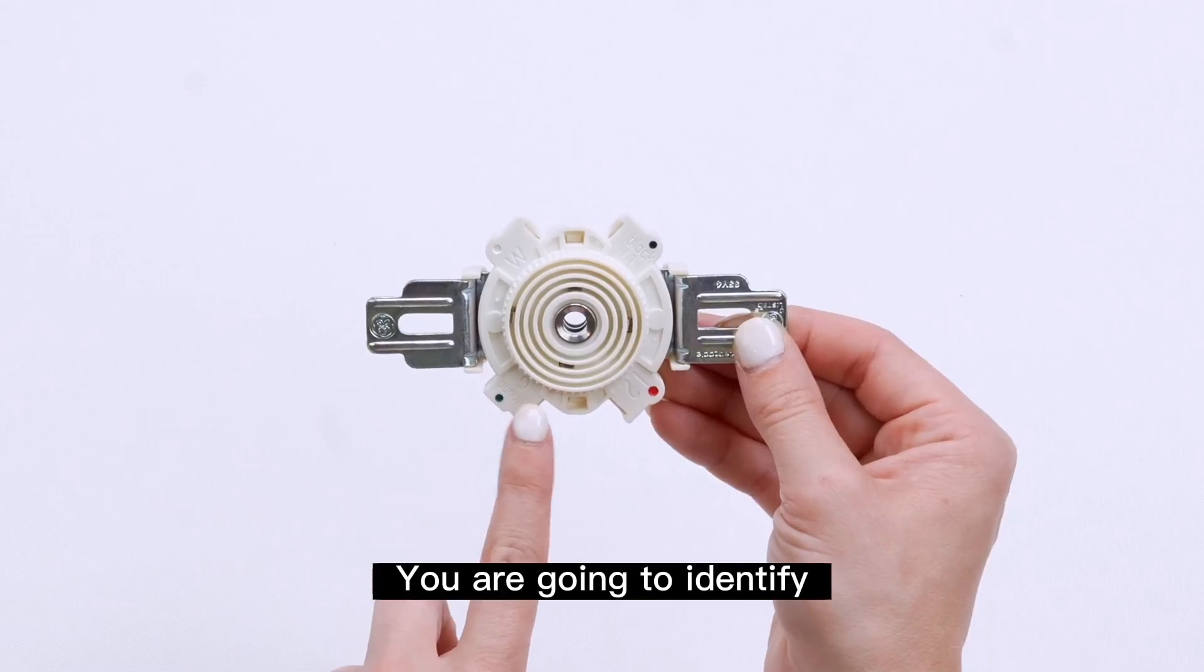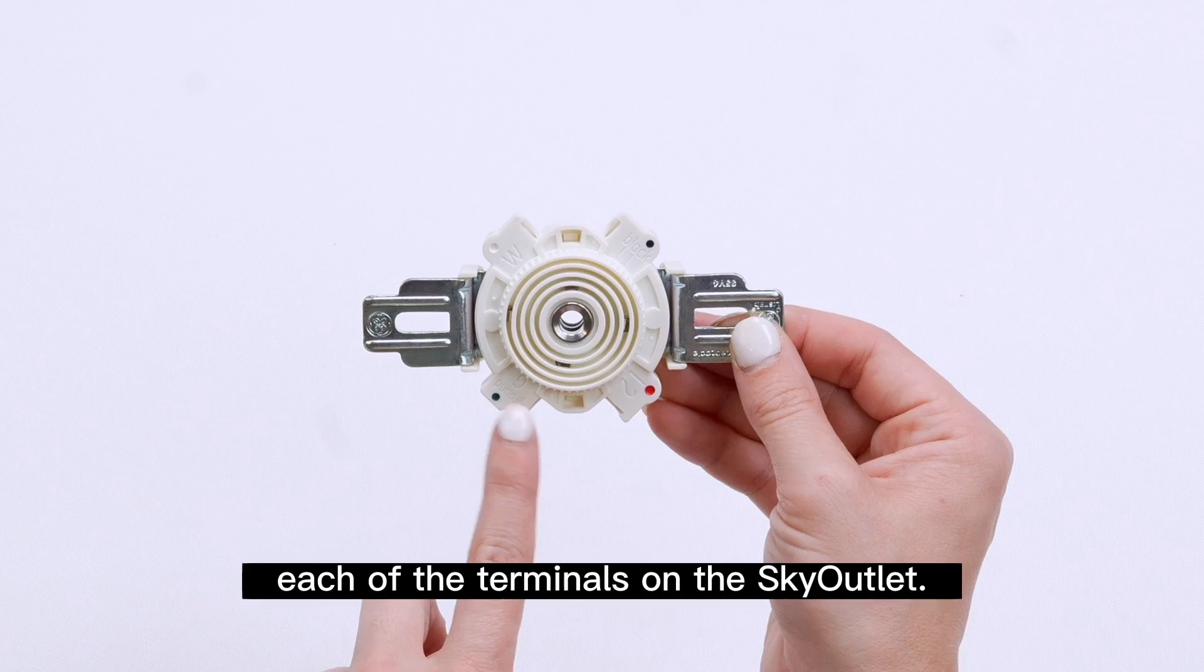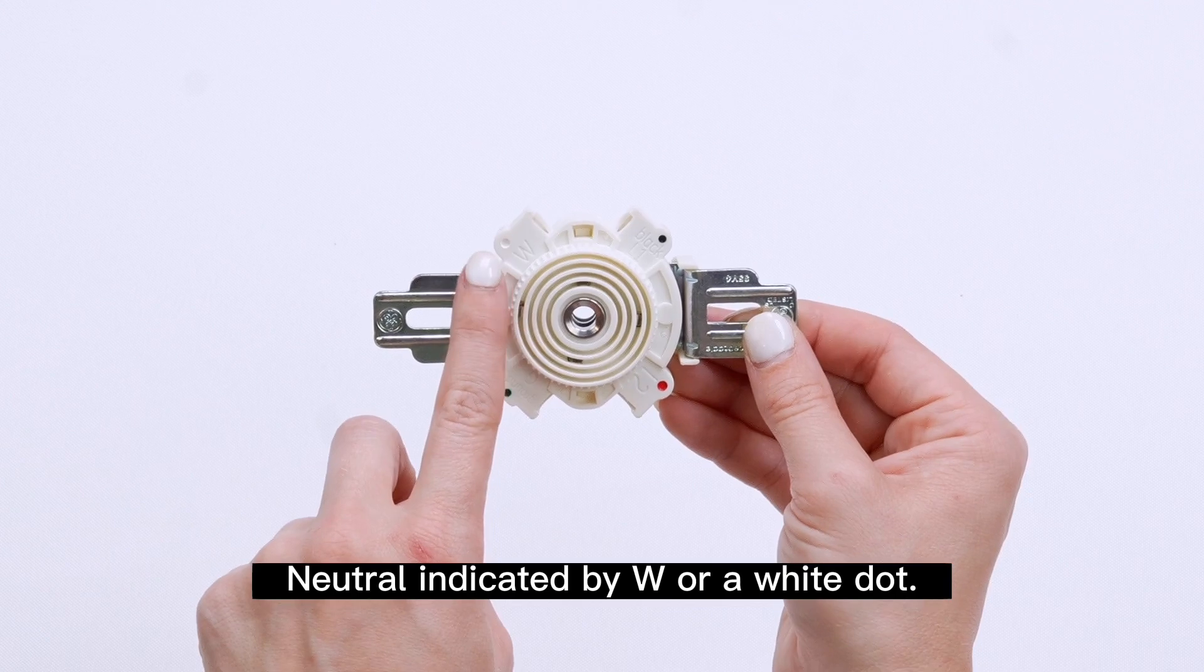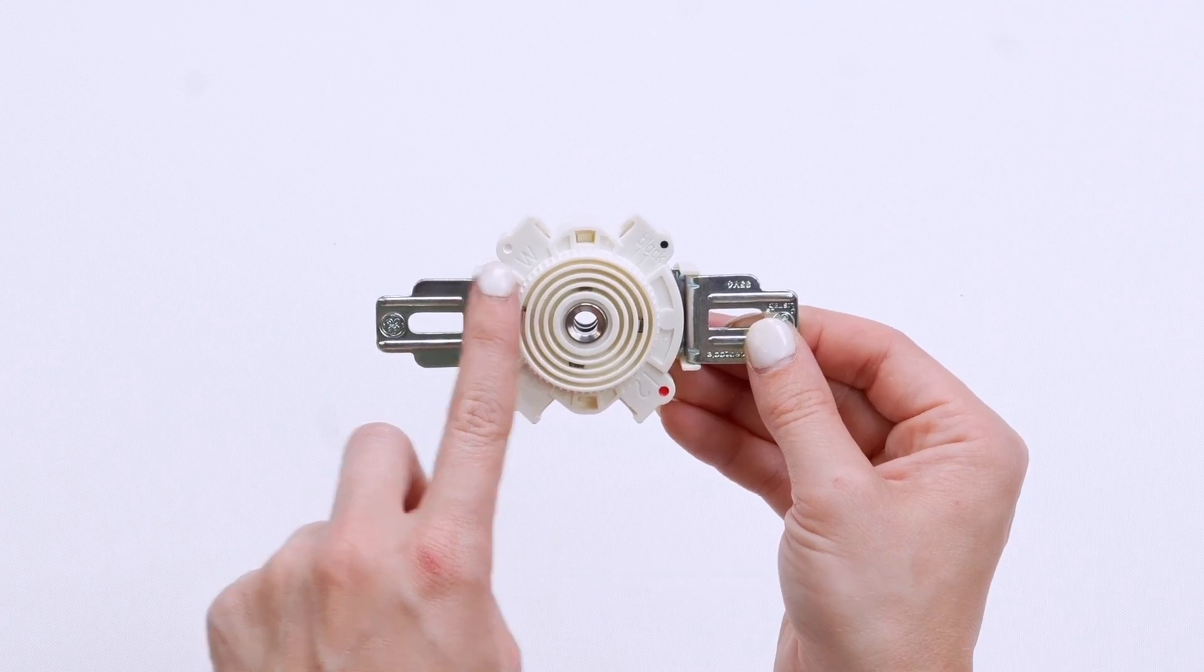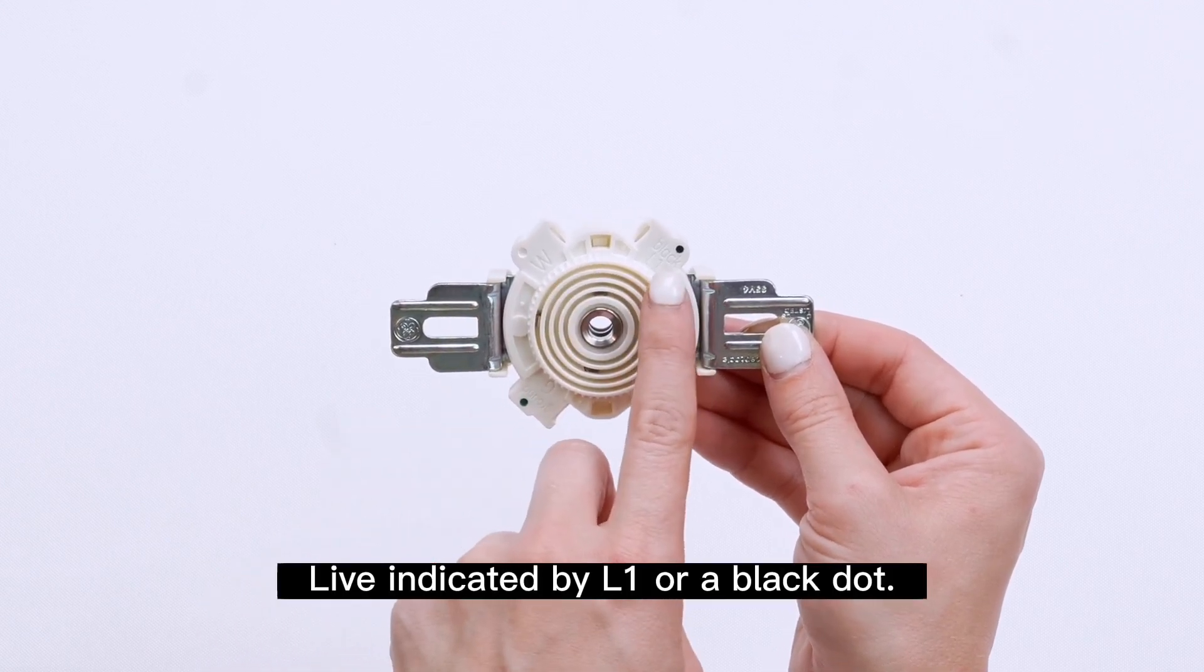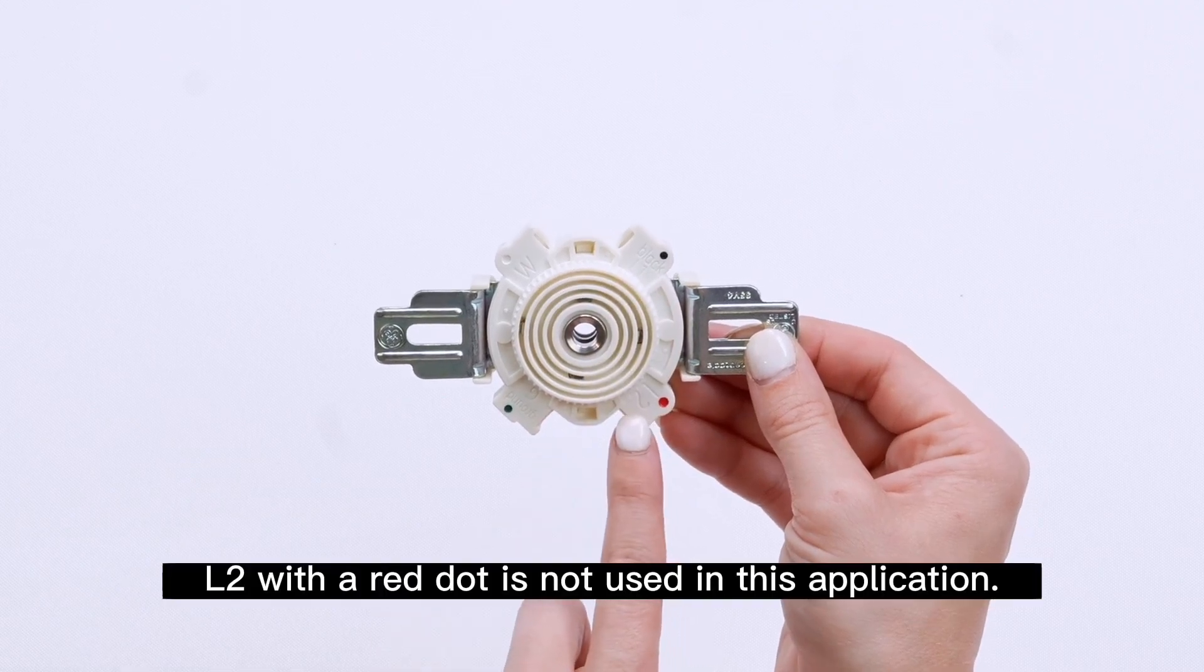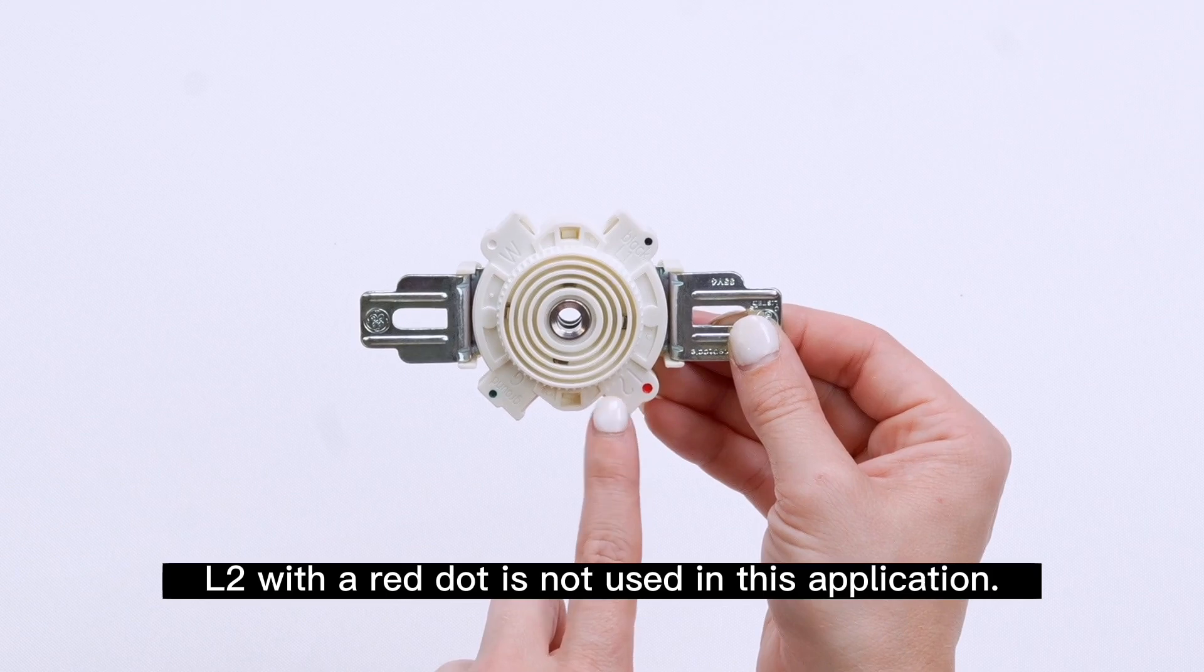You are going to identify each of the terminals on the sky outlet. Ground indicated by a G or a green dot. Neutral indicated by W or a white dot. Live indicated by L1 or a black dot. L2 with a red dot is not used in this application.